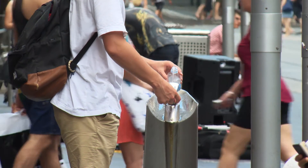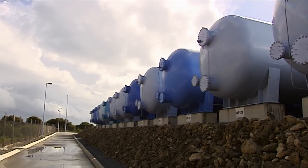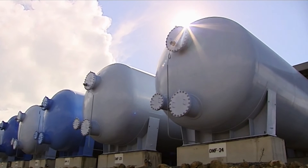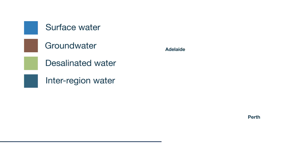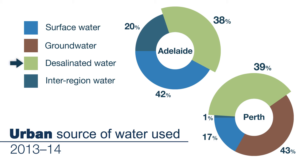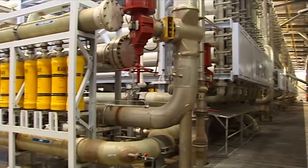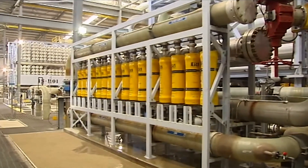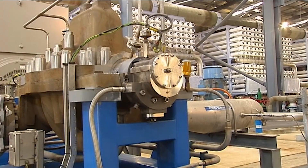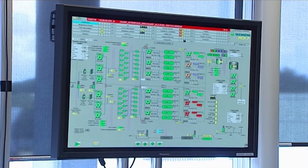If we just look at urban areas, we see that alternative water sources, such as desalinated water, are used to meet 10% of current urban demand around the country. Adelaide and Perth rely on desalinated water for almost 40% of urban supply. Both regions have increased desalinated water production over the last three years, which is helping to conserve surface water stores and ensure water security is not reliant on rainfall into the future.